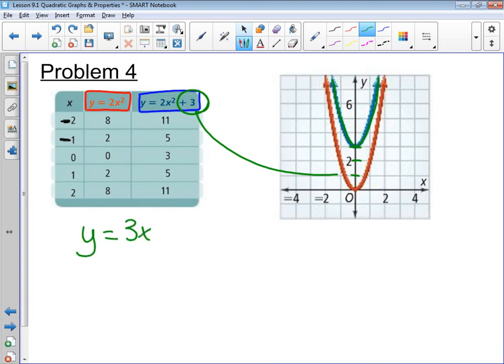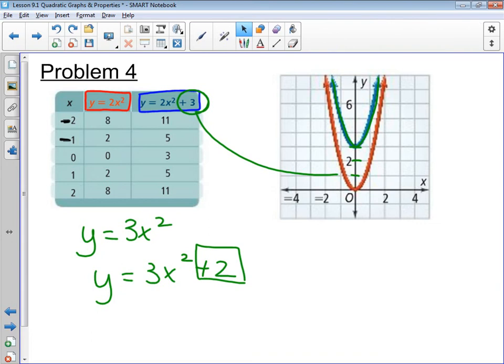So, if I have a parabola like this, or a function like y equals three x squared, and I take that, and I add two, all I'm going to do is shift it up two spaces.